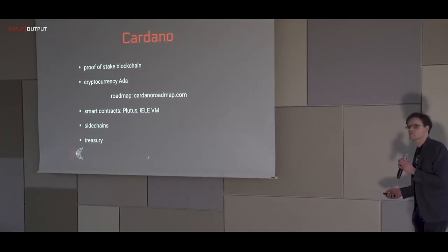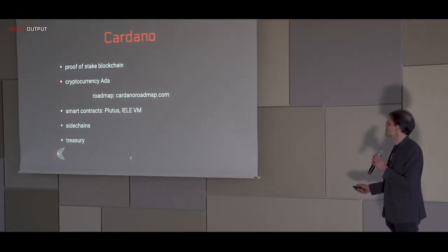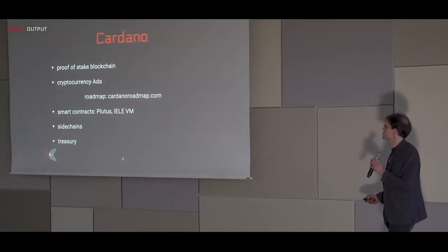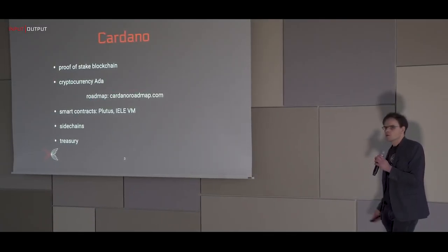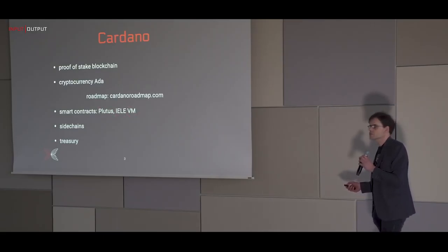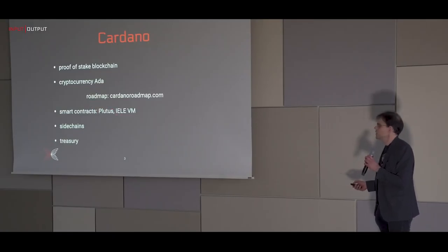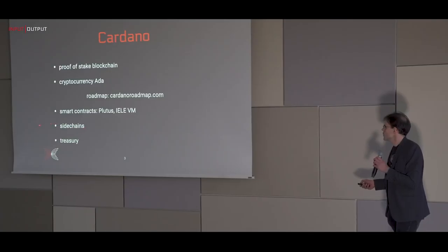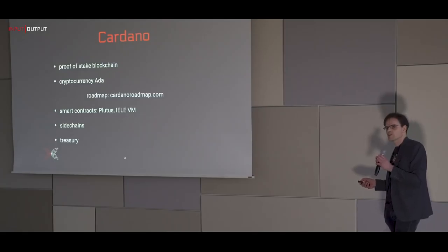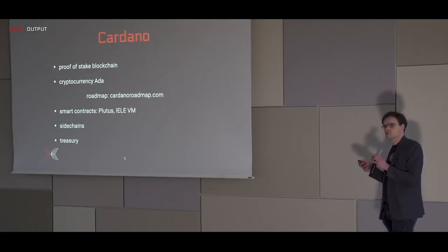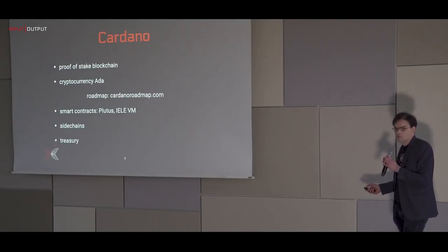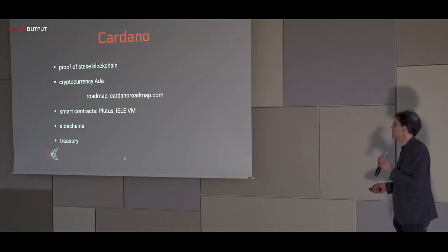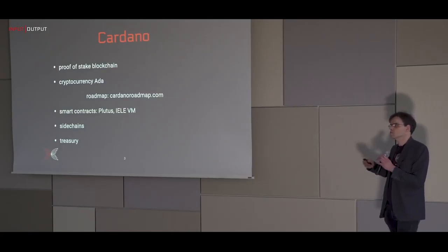Cardano is a proof-of-stake blockchain that runs the cryptocurrency called ADA. Besides running a cryptocurrency, there are lots of things on our roadmap: we're going to add smart contracts using our own language called Plutus, the K framework, and the KEVM virtual machine, enabling smart contracts in many established languages. We'll also introduce sidechains — separate blockchains that run more or less independently but can share information, transfer trust between chains, and help with scalability.